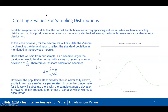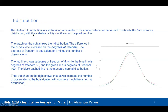First, we talk about creating a z-value from a sampling distribution. The z-score comes from our sample: x-bar minus mu divided by the population standard deviation divided by the square root of n. The problem is the population standard deviation is never known — it's a nuisance parameter. So we replace sigma with s, our sample standard deviation. That's ultimately what we're looking for.